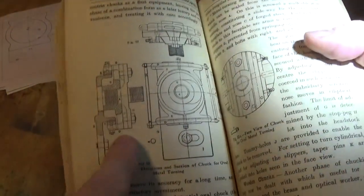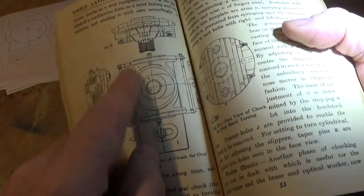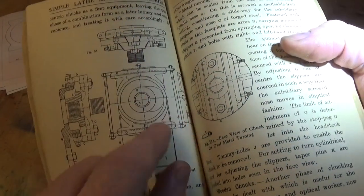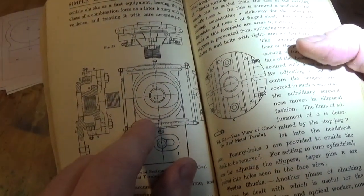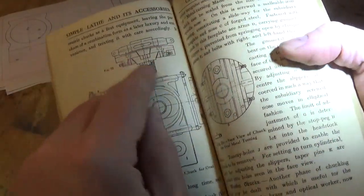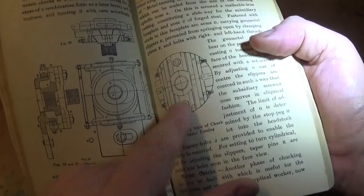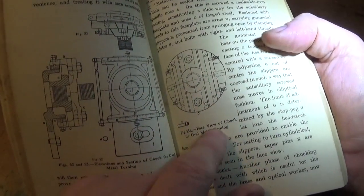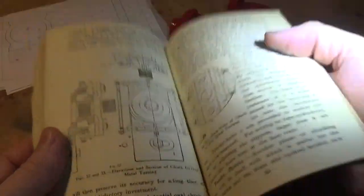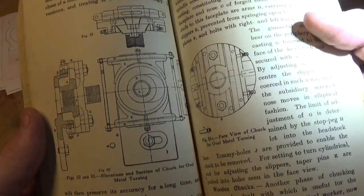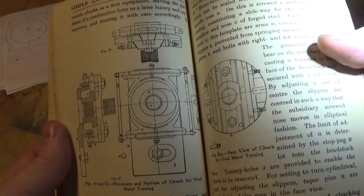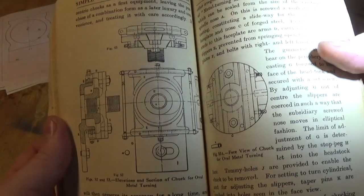There's a side view or section view, and then a top view and a front view, a face view of the chuck for oval metal turning. I cut this up, or I messed around in OnShape for a while and came up with a bit more of an understanding of how it works and what's involved in it.